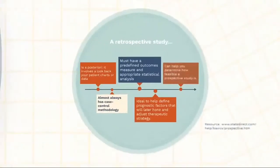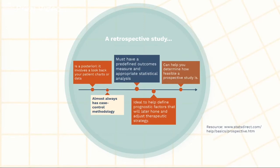How is a retrospective study done? It's obviously a posteriori, meaning it involves a look back at your patient charts or data — one of the reasons it's a good option when you already have the data gathered. It almost always has case-control methodology, meaning you're comparing data from a group of patients with the condition or intervention — the cases — and those who don't have the condition or didn't undergo the intervention — the controls. You must have a predefined outcome, and you must have appropriate statistical analysis. This is a good time to plug the importance of two support groups: a statistician and a librarian. These folks can help you with your methodology, your systematic approach, and with defining the appropriate statistical analysis for your particular outcomes measure.